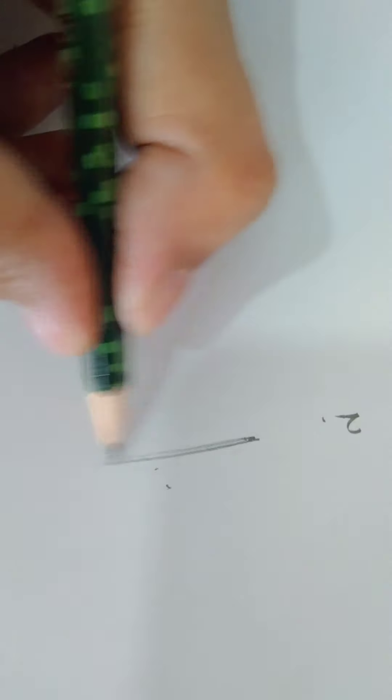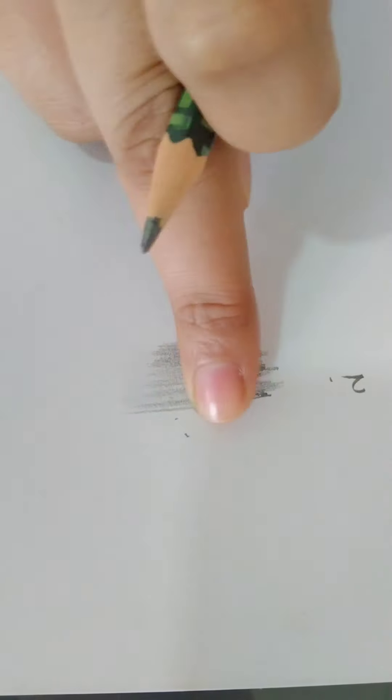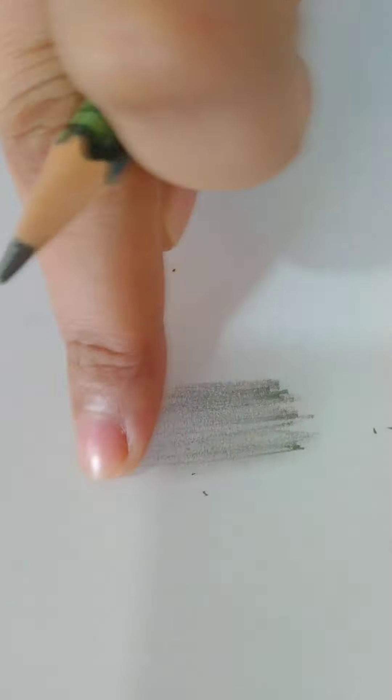So second one is soft gradation is obtained by the smudge. And dark. You can smudge with the help of the finger.